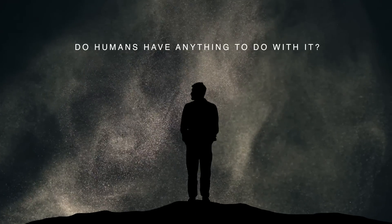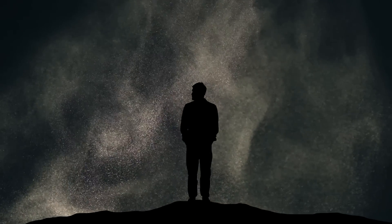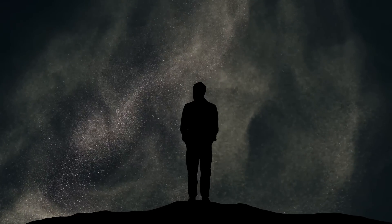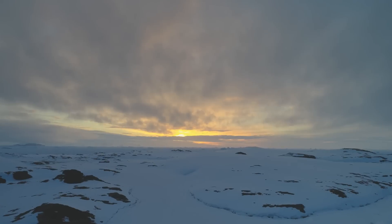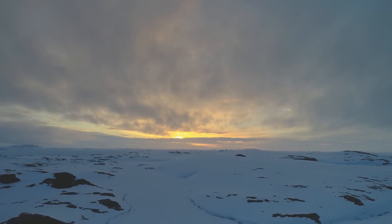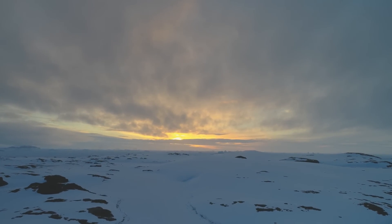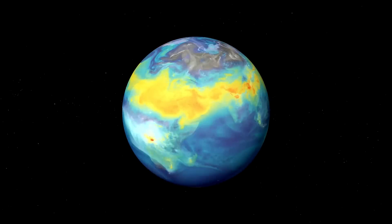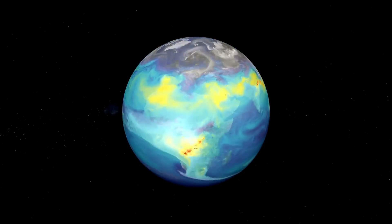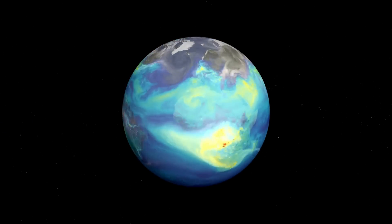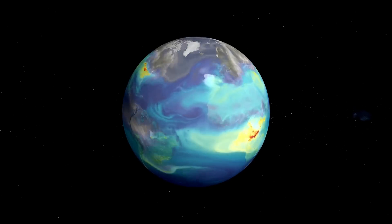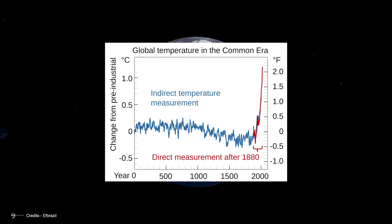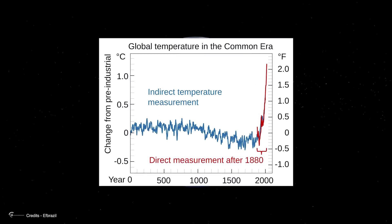So far, everything seems to indicate that the climate change we observe throughout the planet is part of a recurring event — the interglacial periods, which always occur between each glacial period, whether or not humans are present. However, this is not the case. Throughout the Holocene, the current interglacial period, human activity has significantly impacted the global climate, especially since the Industrial Revolution in the 19th century, as can be seen in the graphs of the global temperature record of the last 2,000 years.